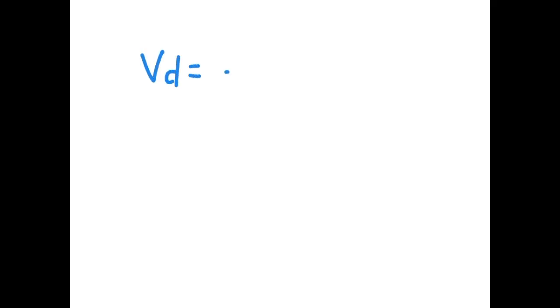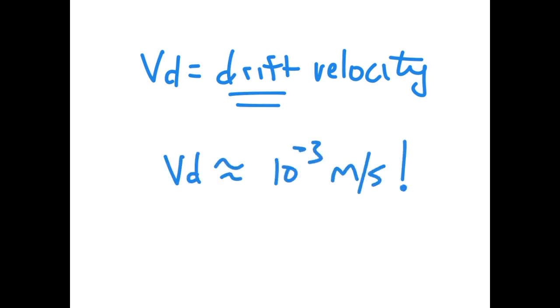The average velocity of an electron as it travels down the length of a piece of wire is called the drift velocity. As the name implies, the electrons don't move very fast at all. In most metals, the drift velocity is around one millimeter per second.